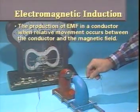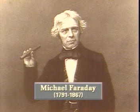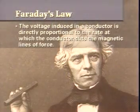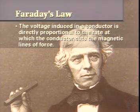The amount of voltage produced by electromagnetic induction is determined by four factors. These factors were originally stated by Michael Faraday, an English scientist of the early 1800s. Let's hear how he might have described it. The voltage induced in a conductor is directly proportional to the rate at which the conductor cuts the magnetic lines of force. This is now known as Faraday's law.